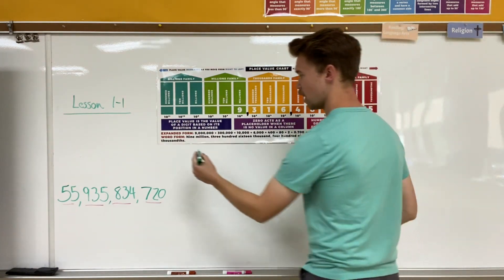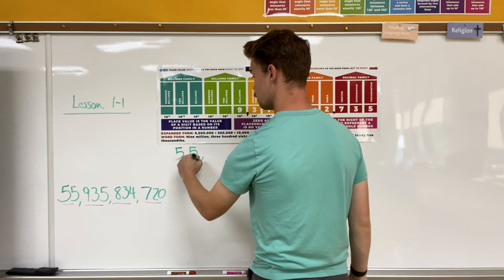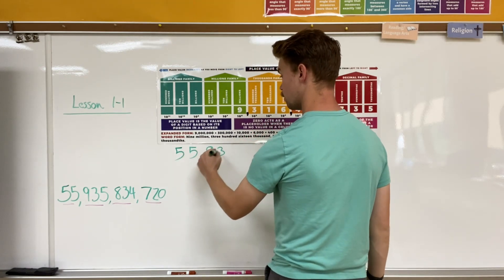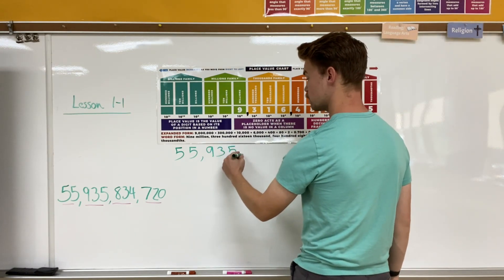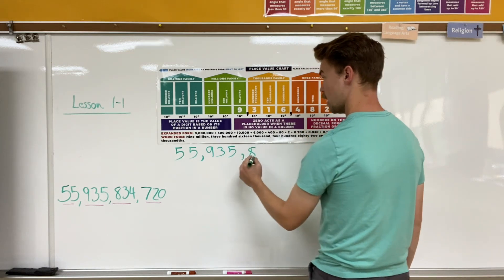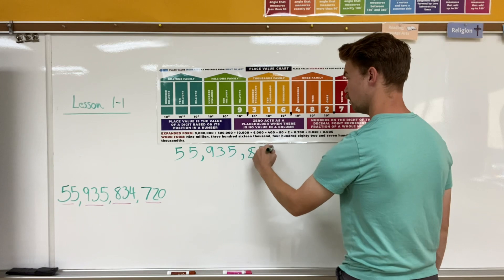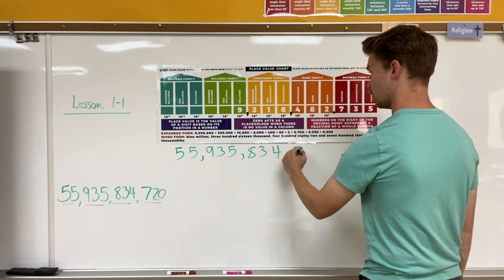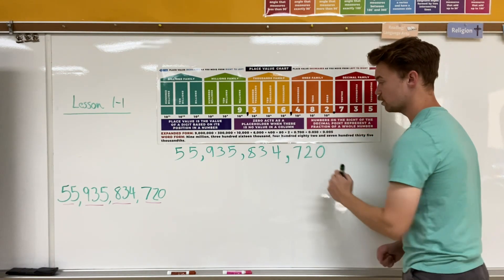Let me line it up: five in the 10 billion spot, five in the billion spot, nine in the 100 million spot, three in the 10 million spot, five in the 1 million spot, eight in the 100,000 spot, three in the 10,000 spot, four in the thousand spot, seven in the hundreds, two in the tens, and zero in the ones.